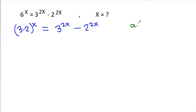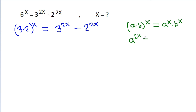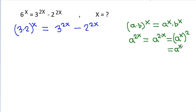And, (a times b) to the power x is equal to a to the power x times b to the power x. And, a to the power 2x is equal to a to the power (2 times x), that is equal to (a to the power x) to the power 2, which is equal to a to the power x times a to the power x.